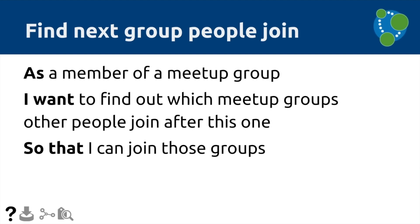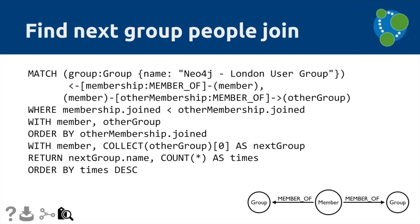The next query I wanted to do: is there some pattern to what groups people join next? Similar to how LinkedIn tells you what companies people moved to after leaving a company. I wanted to know if there's anything like that in the Meetup graph. The question is: as a member of a meetup group, I want to find out which groups people join after this one, and perhaps join those groups myself. We can actually work that out with the data we already have — although the way we do it in this particular query doesn't really make much use of the benefits of modeling the data as a graph.